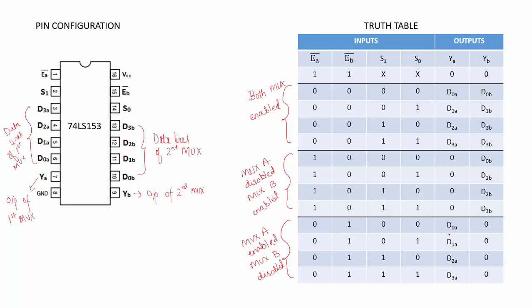When MUX A is enabled, for select line 0 0 the output is D0A, for 0 1 it is D1A, for 1 0 it is D2A, and for 1 1 it is D3A.